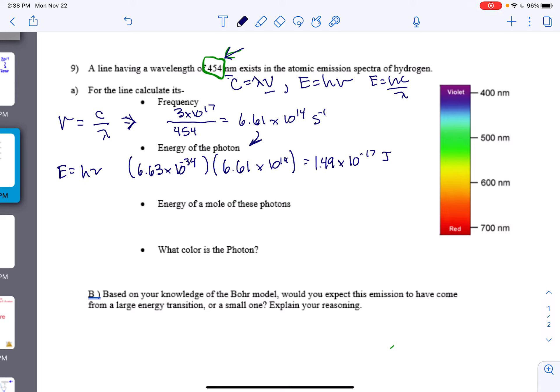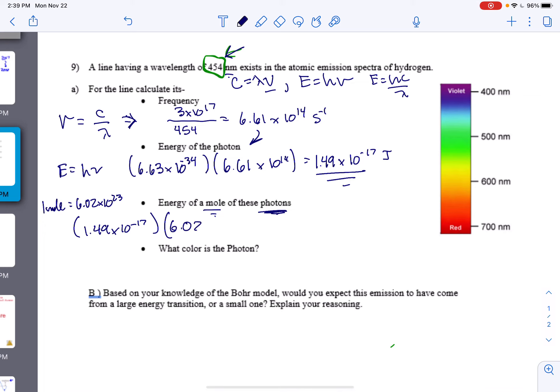So now, energy of 1 mole. Anytime we talk about a mole, which we've done for a lot now, 1 mole is equal to 6.02 times 10 to the 23rd of whatever I'm talking about. So for this problem, it means I have that many photons. So to find the energy, I take the energy of 1. So I take 1.49 times 10 to the negative 17, and I multiply by how many there would be in 1 mole,